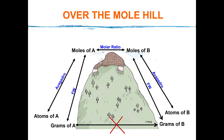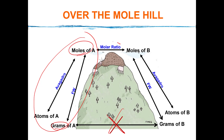Remember I talked about the molehill — you cannot go under the molehill, you must go over it. If I have grams of something, I convert to moles of that. Then in a reaction I use the molar ratio to go directly from moles of one thing to moles of something else, and then I can calculate grams of what I'd produce. I can't go directly — I've got to convert to moles first, then convert to atoms or grams or whatever I want.